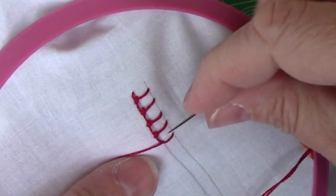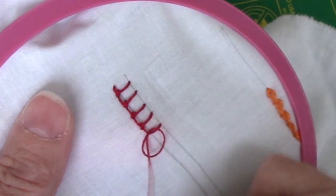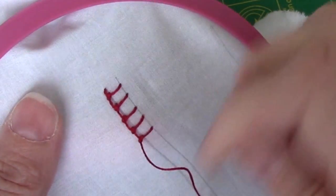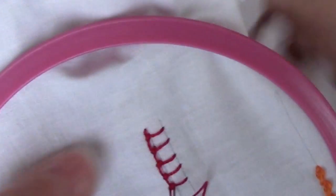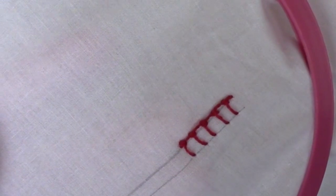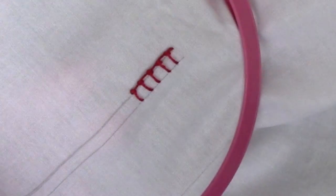And tie a knot. When I'm finished, I'm just going to take the thread down on that top line, or my left line. This way it would be the top one. Pull through, and then knot off on the back.